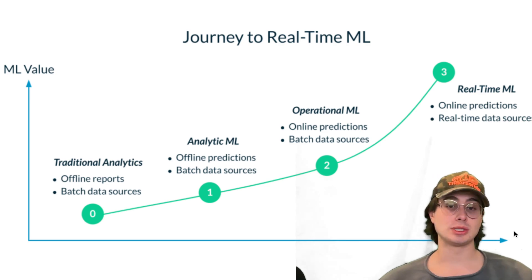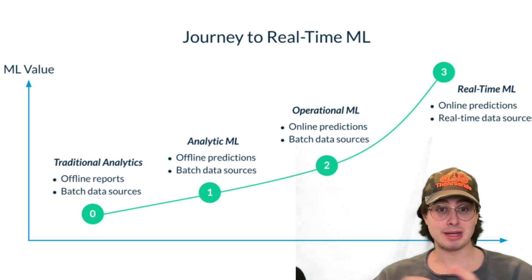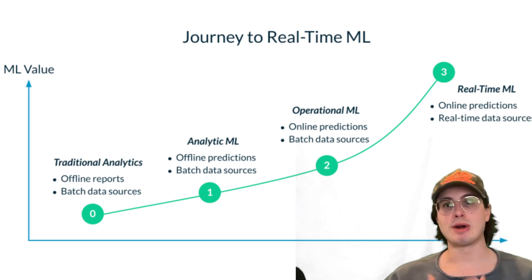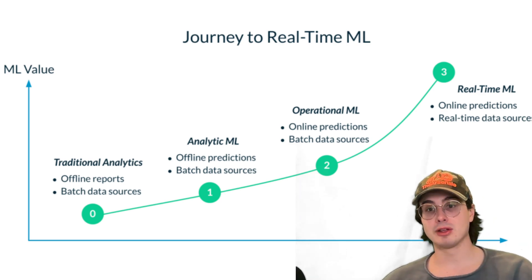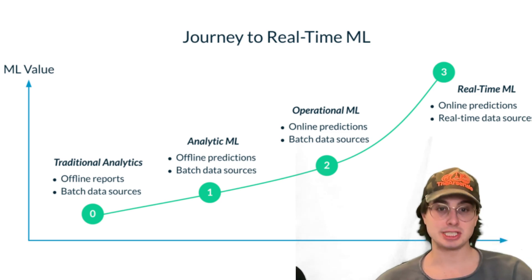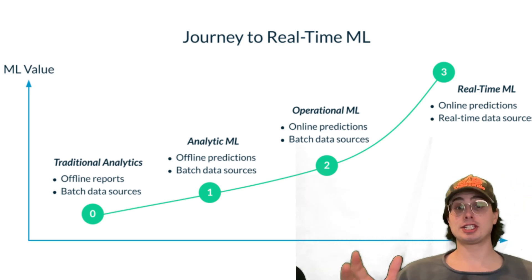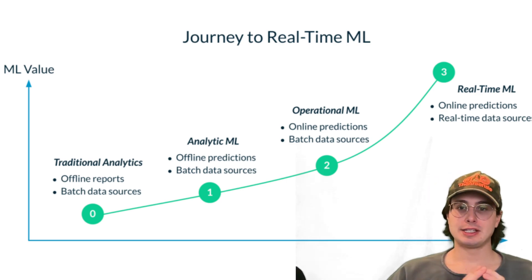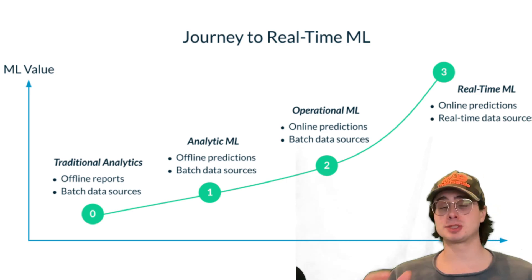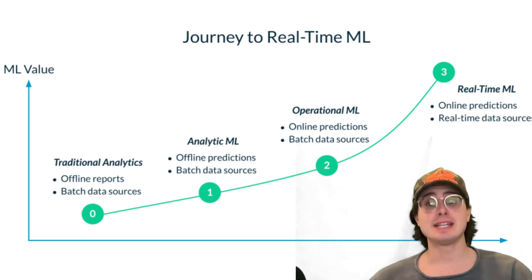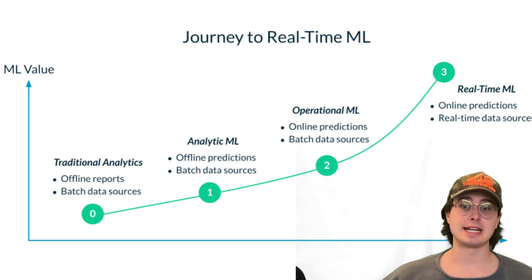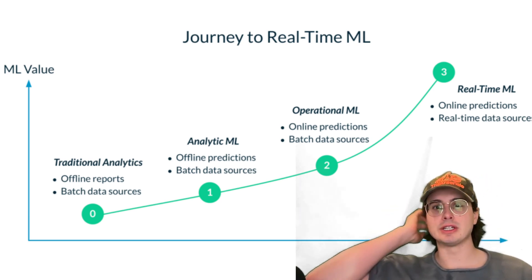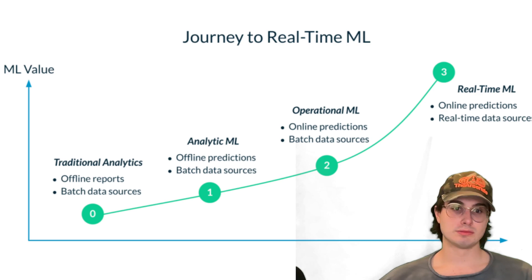Being able to instantly react to operational changes and security threats is critical. AI models running in streaming or low-latency mode can incorporate every new user interaction into the model, constantly training and learning from every operation. The cost of delay from relying on old-school batch processes can equate to millions of dollars in lost revenue — for example, allowing fraud to go undetected all day because the detection process only runs once at night.